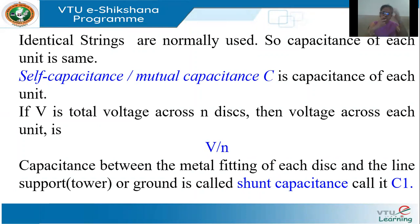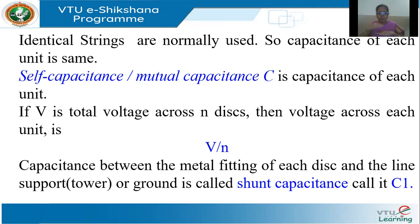Normally, a suspension or string insulator is formed from different disks. How many disks you use will depend on what voltage rating you need. If you use identical disks, the capacitance of each unit will be the same because they're all identical. You can call it the self-capacitance or the mutual capacitance — it's called C. That is for each unit. If I have n disks connected between the conductor and the grounded tower, and V is the voltage, then V by n is the voltage across each disk.